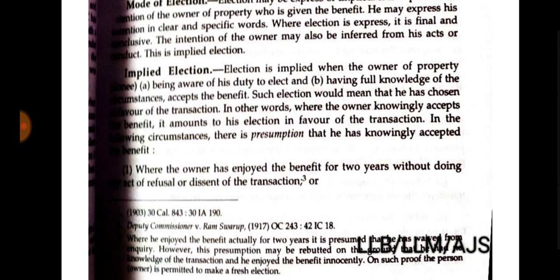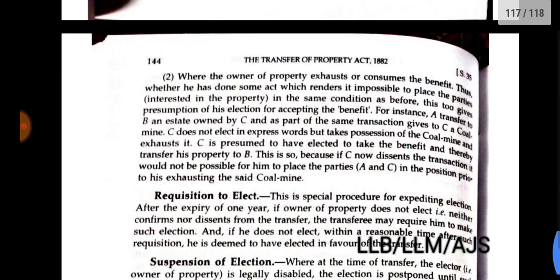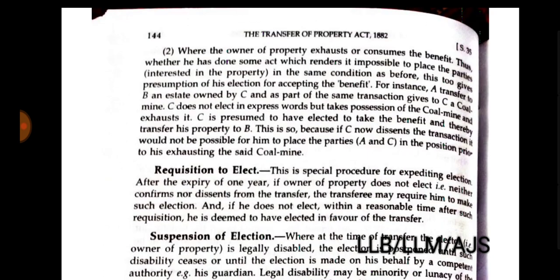Election is implied when the owner of the property, being aware of his duty to elect and having full knowledge of the circumstances, accepts the benefit. This would mean that he has chosen in favor of the transaction. In other words, when the owner knowingly accepts the benefit, this amounts to his election in favor of the transaction. In the following circumstances there is a presumption that he has knowingly accepted the benefit: one, where the owner has enjoyed the benefit for two years without refusing; two, where the owner exhausts or consumes the benefit.